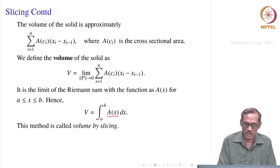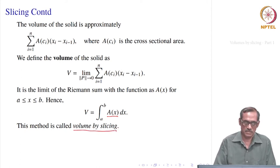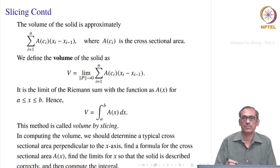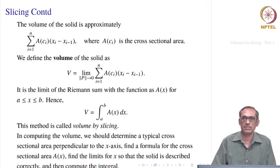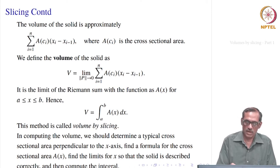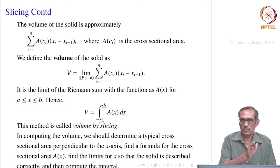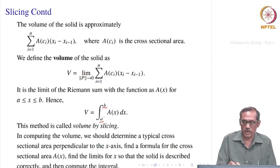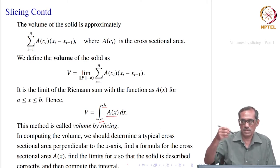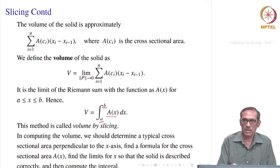Since we are taking slices, we call this method computing volume by slicing. To compute this volume, we first find a typical cross-sectional area perpendicular to the x-axis. We need the points a and b by projecting orthogonally to the x-axis — the two planes perpendicular to the x-axis, both parallel to the yz-plane, between which the solid exists. Then we find the cross-sectional area. At any point x, we express the slice as A(x), and the definite integral from a to b of A(x) dx gives the volume.